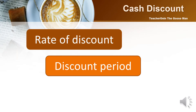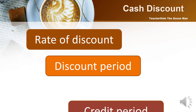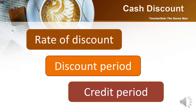Next, we have the discount period, indicating the time period when a cash discount can be applied. And finally, the credit period indicates the time when the invoice must be paid.